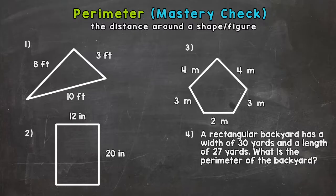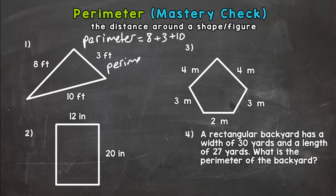So number one, we have a triangle, so we have three sides to add up. Remember, perimeter is the distance around, so make sure you hit all the sides and add them up. So we have 8 plus 3 plus 10. We have all the sides included there. So let's do our math: 8 plus 3 is 11, plus 10 is 21. You should have for number one, and don't forget your unit of measure, that is very important. Number one is feet, so 21 feet.